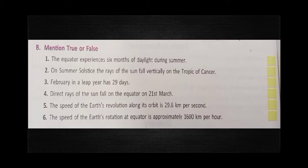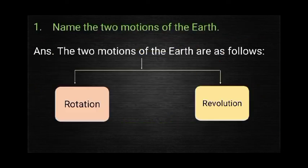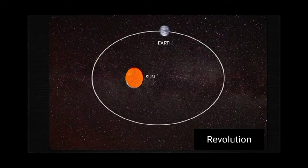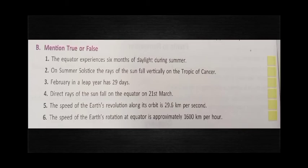Question 5: The speed of the Earth's revolution along its orbit is 29.6 km per second. This answer is also true. The speed at which the Earth moves along its orbit around the sun — its revolution speed — is 29.6 km per second, as we can see in the diagram.